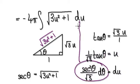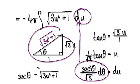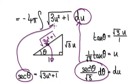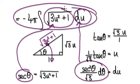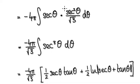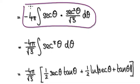We can now put this into here. Looking at the diagram, secant θ would simply be hypotenuse over 1, which is √(3u²+1). So we can put secant θ into this whole thing here, which then becomes this.